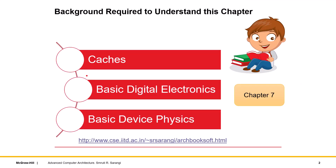What kind of background do you need? Caches for sure, some amount of digital electronics, and some background of basic computer architecture, which you can get from the previous book at basic-computer-architecture.com. Other than caches and basic digital electronics, we would need some device physics, at least to understand non-volatile memory devices. Chapter 7 is broadly what you need to start with.